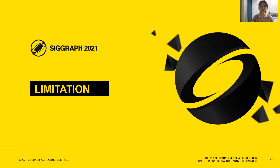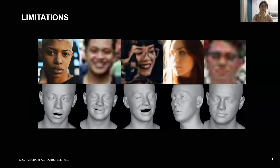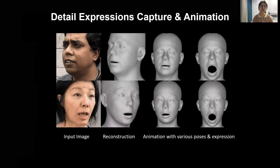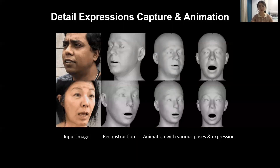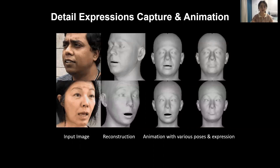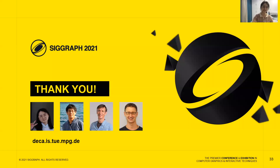While DECA achieves state-of-the-art results for reconstructed face shape and provides animatable details, it has some limitations. For instance, DECA doesn't perform well on very blurry images. Although training with millions of in-the-wild images helps DECA generalize to a wide range of ethnicities, it can still fail for darker skin, especially in the lip region. This suggests that more diverse training data and a better albedo model are needed. Overall, given a single input image, DECA reconstructs a detailed 3D mesh that can be animated by changing the global pose and by varying facial expression and jaw pose parameters. Codes and models are available. Thanks for your attention.